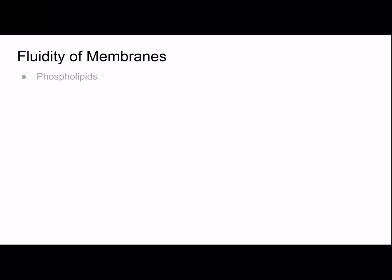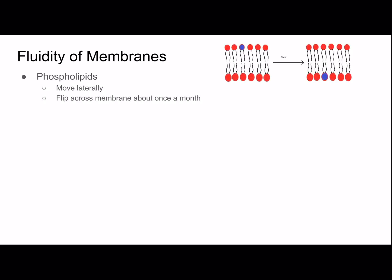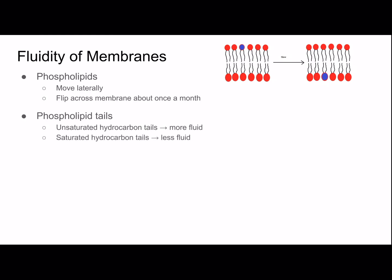Now let's talk about the fluid part of the fluid mosaic model. Phospholipids move laterally and flip across the membrane about once a month. Phospholipid tails — unsaturated hydrocarbon tails allow the membrane to be more fluid, and saturated hydrocarbon tails make the membrane less fluid.